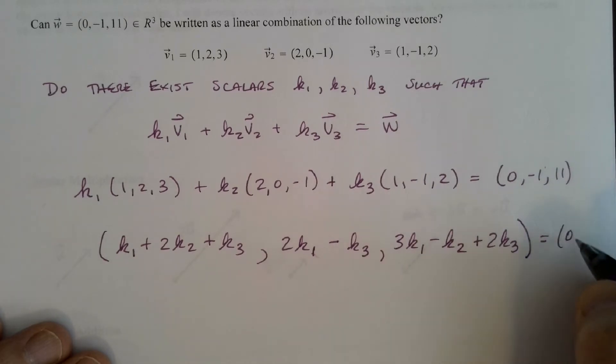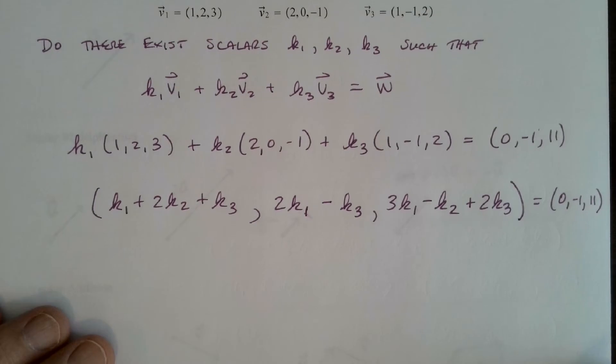The third component would be 3k1 minus k2 plus 2k3. And again, equal to 0, negative 1, 11.